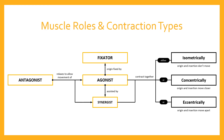Obviously, if the fixator's role is to fix the origin of the agonist and hold it still in place, then the fixator's contraction type must always be isometric. Because to hold the bone or bones on which the agonist originates still, the fixator must contract in such a way that there's no movement of that muscle — we're trying to hold the joint still. So the fixator will always contract isometrically in order to hold the agonist's origin fixed in place, hence the name fixator.